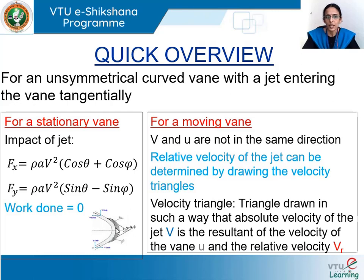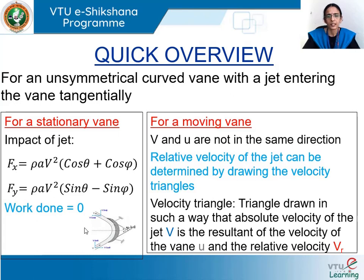But if the vane is moving with velocity u in the horizontal direction — that is, along the positive x direction — the velocity of the jet and velocity of the vane are not in the same direction. We need to express the impact of the jet in terms of the relative velocity, and in that case the relative velocity of the jet can be determined by drawing the velocity triangles.